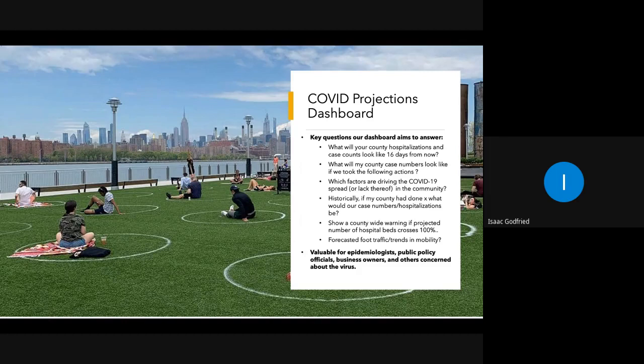Also, what we're looking to provide is interpretability for both epidemiologists and public policy people — saying what are the factors that the model thinks are currently driving COVID spread in your community. Finally, we do want to have some support for counterfactual inference — so historically, if my county had done this at this point in time, what would our case numbers and hospitalizations look like now?